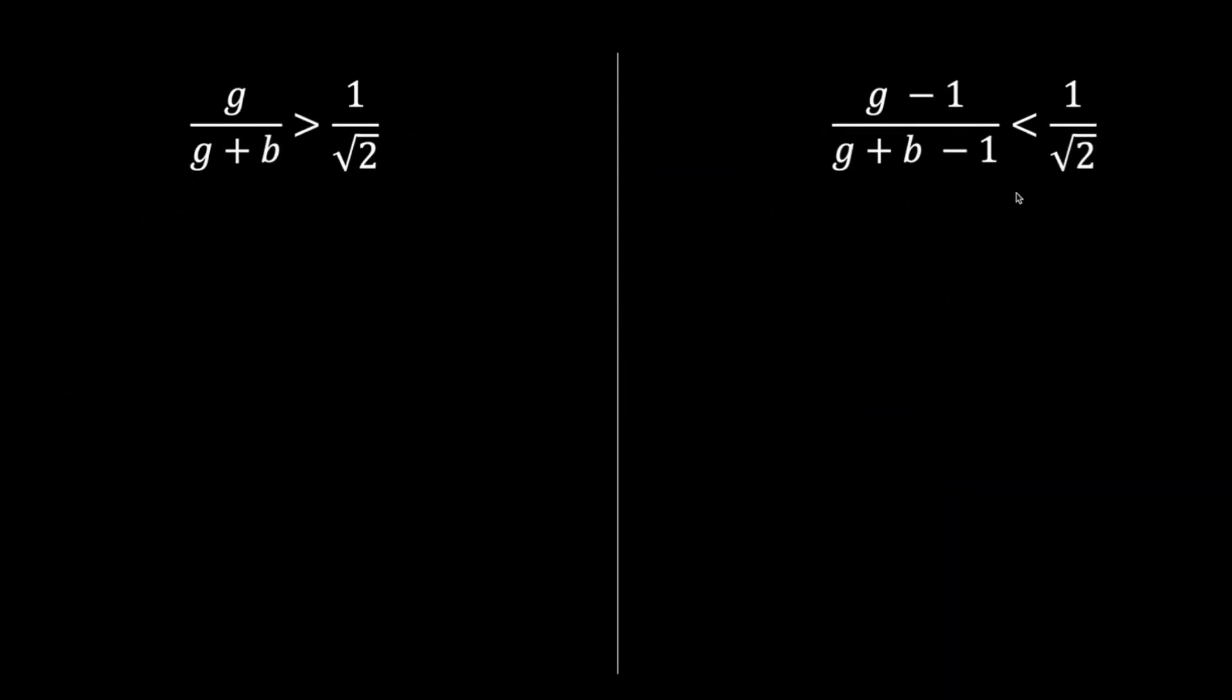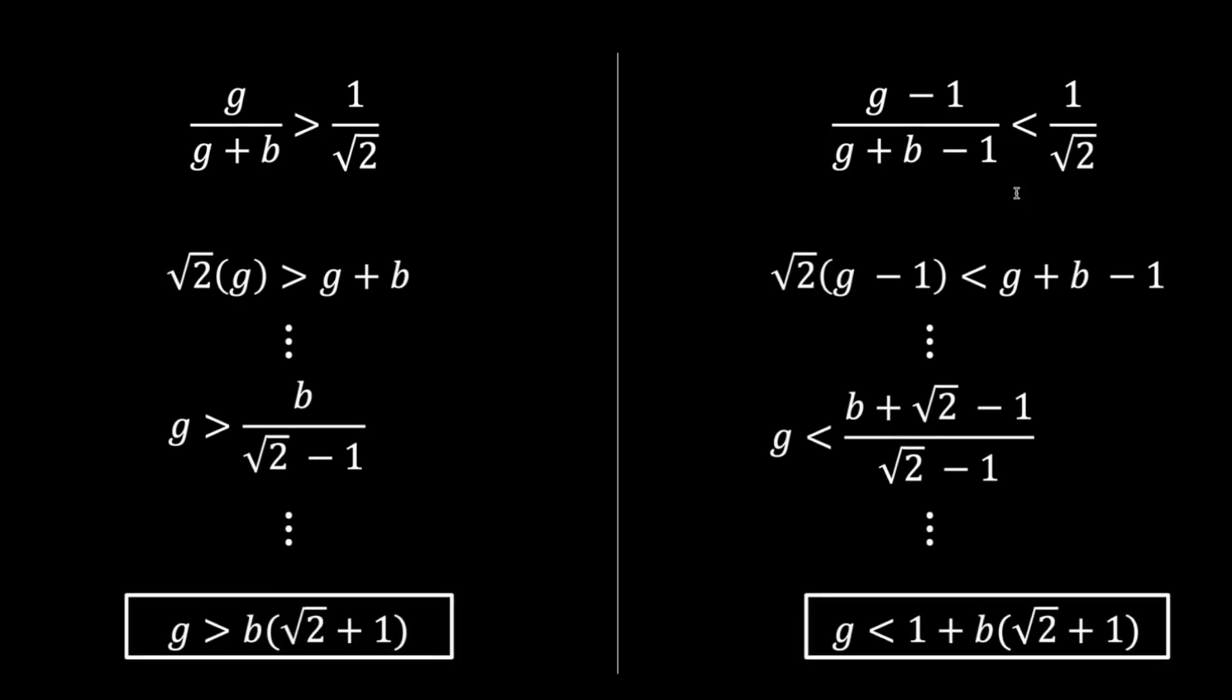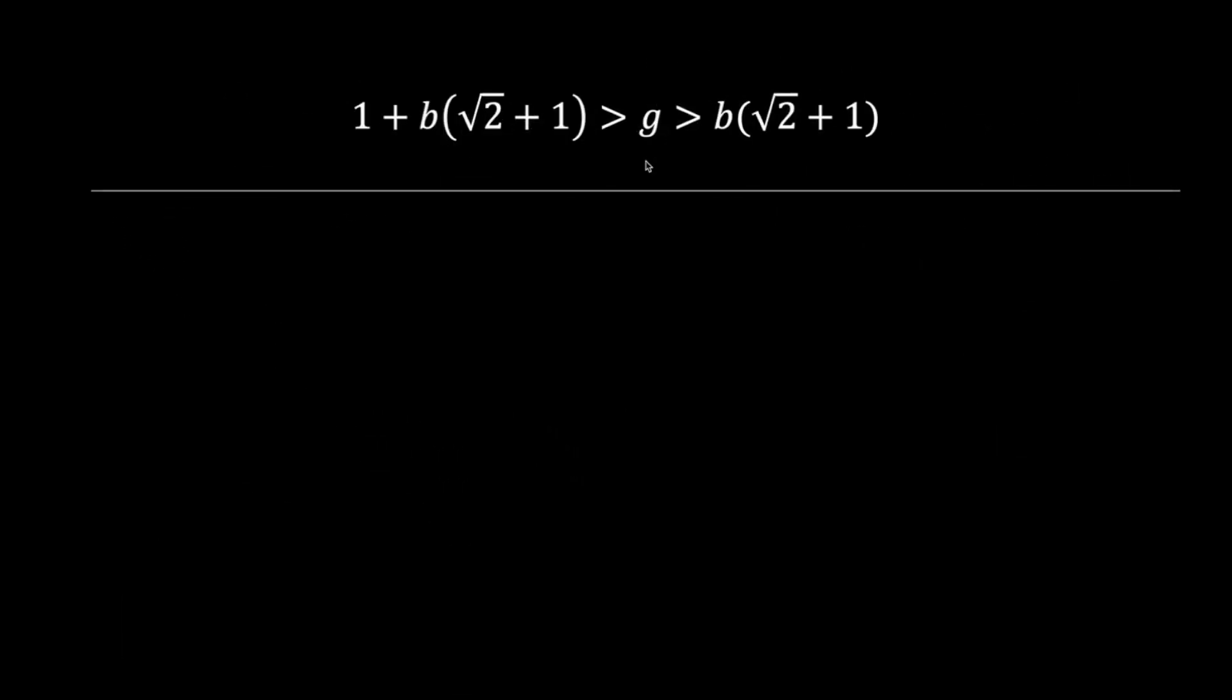With these two inequalities, and after some trivial math, we obtain a range of values that bounds g, the number of green socks, in terms of b, the number of blue socks. Putting these together, g's value is now bounded clearly in terms of b.